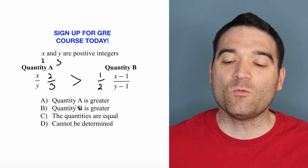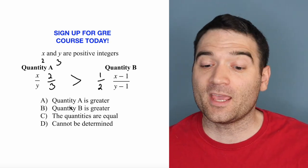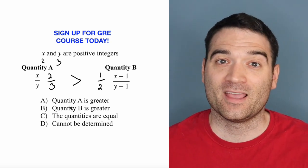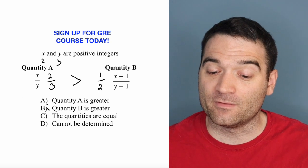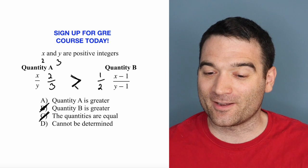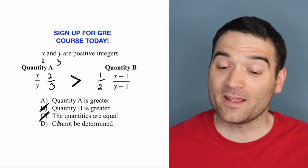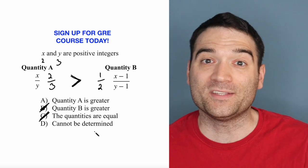On these questions, we want to know what is always true. Yeah, we found one case where quantity A is greater than quantity B. And that means we can get rid of this one and this one. We just found a case where quantity A is greater. So we can definitely say that B is not always greater. And we can definitely say that the two quantities are not always equal.